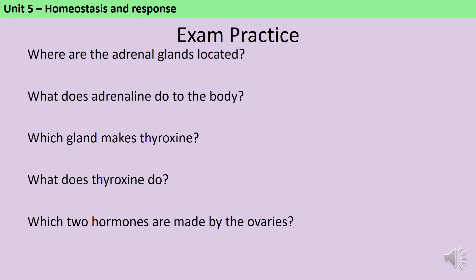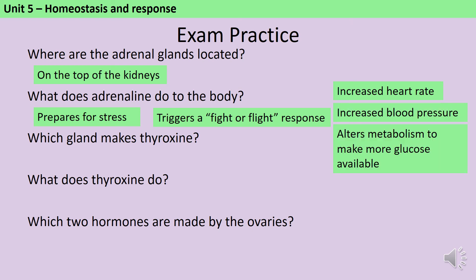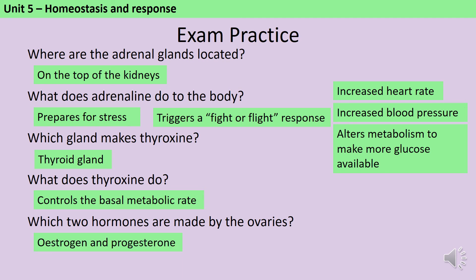Here are five final questions — pause the video and write down your answers to each one. The adrenal glands are in the abdomen, sat on top of the kidneys. Adrenaline prepares your body for stress or fear — it triggers a fight-or-flight response, involving an increased heart rate, increased blood pressure, and altered metabolism so that your muscles have access to more glucose and more oxygen. Thyroxin is made by the thyroid gland and controls the basal metabolic rate. The two hormones made by the ovaries are oestrogen and progesterone.